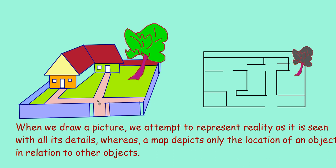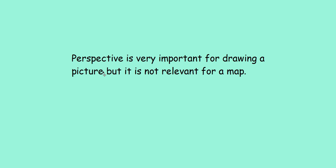If a person is looking from the front, he can draw the picture of this house as given here. But if a person is looking from this side, the picture will be extremely different. But in all cases, the map remains the same. Perspective is very important for drawing a picture, but it is not relevant for a map.